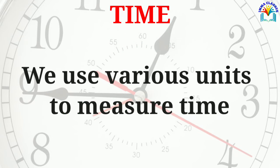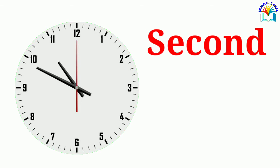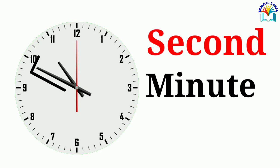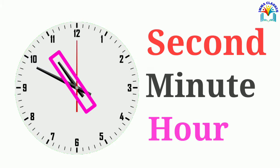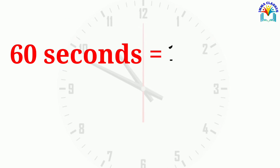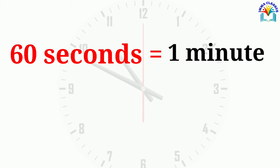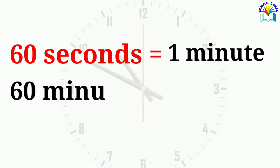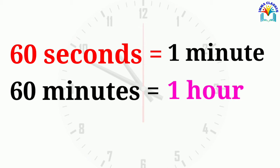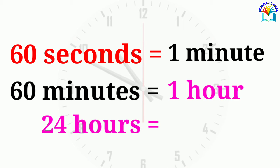We use various units to measure time: second, minute, hour. 60 seconds make 1 minute. 60 minutes make 1 hour. 24 hours make 1 day.